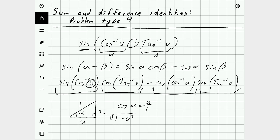And with that picture, we can then determine the sine of alpha. Because sine is opposite over hypotenuse. So, square root 1 minus u squared over 1.